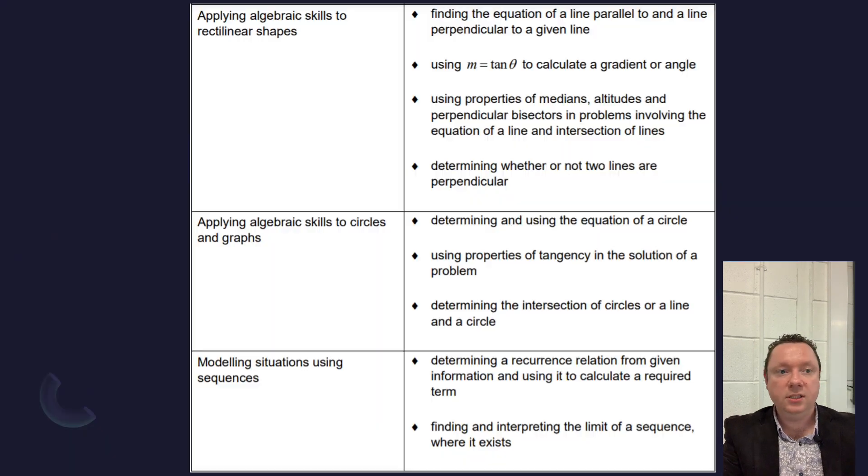OK, algebraic and geometric skills. So we've got all our usual straight line stuff, perpendicular lines, knowing that the gradient is tan theta, properties of medians, altitudes, perpendicular bisectors, equations of circles, tangents to circles, intersections of circles and lines, that's all still there. The bottom bit's always been out, been out for a while, recurrence relationships. So that's the only thing on this page that I am crossing out.